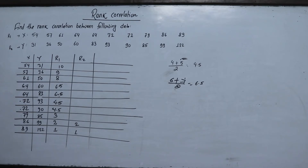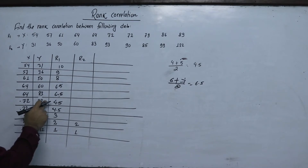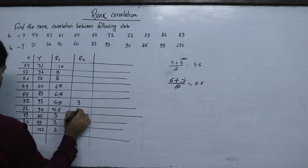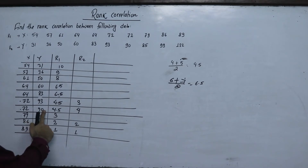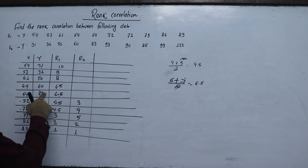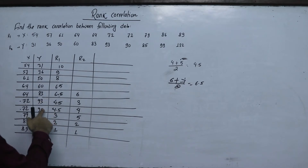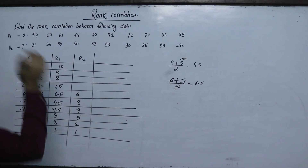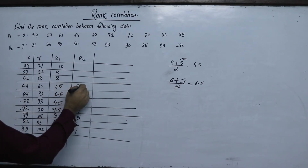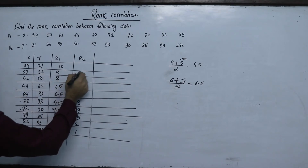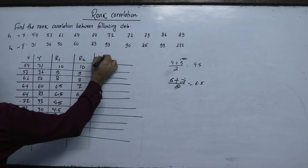Ranking the Y values: 99 is 1st, 95 and 93 follow. 83 gets 6th position, 60 gets 7th position, then 58 gets 8th position, and the remaining values take 9th and 10th positions.